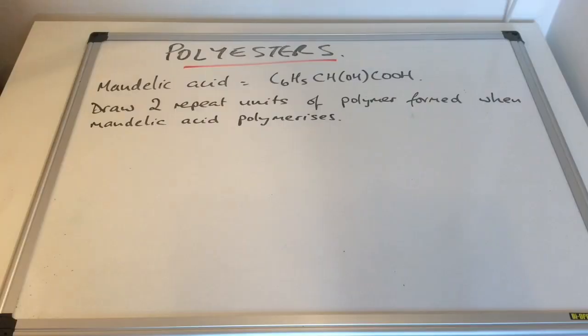I'll go on then, we'll do one more. So I found this one here again from an OCR paper. So this one gave you the structure of an acid that you've probably never seen before called mandelic acid. So there's its structural formula C6H5 CHOH COOH. And you have to draw two repeat units of the polymer formed when mandelic acid polymerizes. So again pause the video, have a go and then play on.